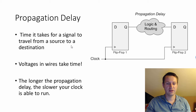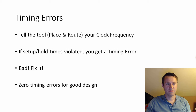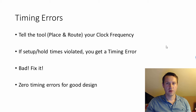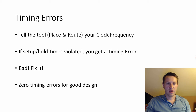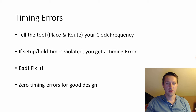Propagation delay is concerned with two flip-flops; setup and hold time concerns one flip-flop. Timing errors: you tell the place-and-route tool your clock frequency — 50 MHz, 200 MHz, whatever it is — and if any setup and hold times are violated, a timing error will pop up. You should never ignore it; you should fix it. Pay very close attention to timing errors because the tool is telling you this isn't going to work. You really want zero timing errors for a good design.